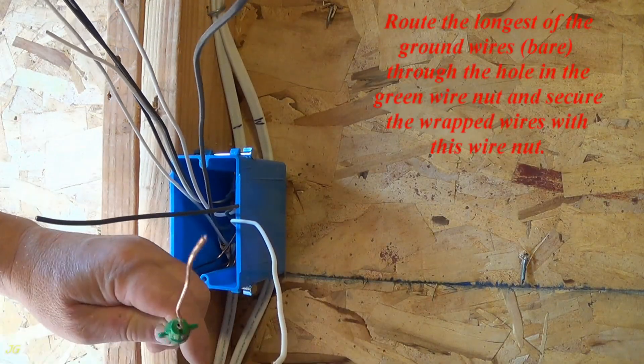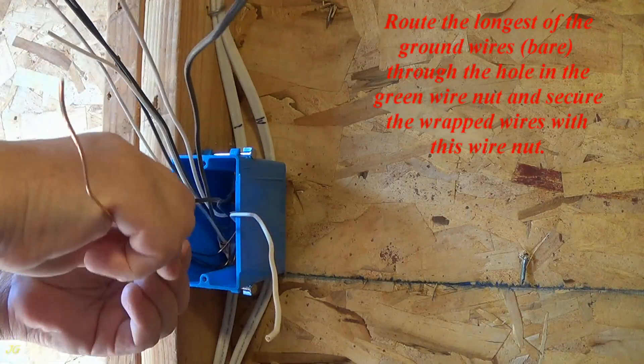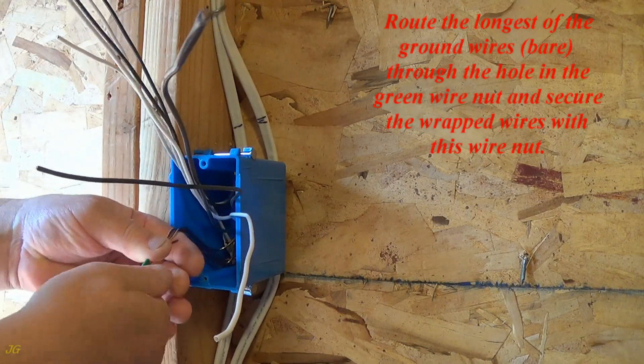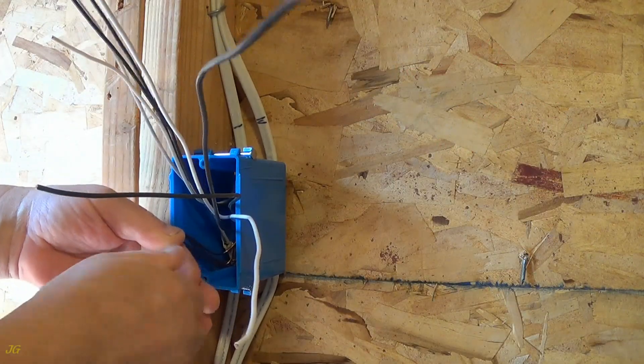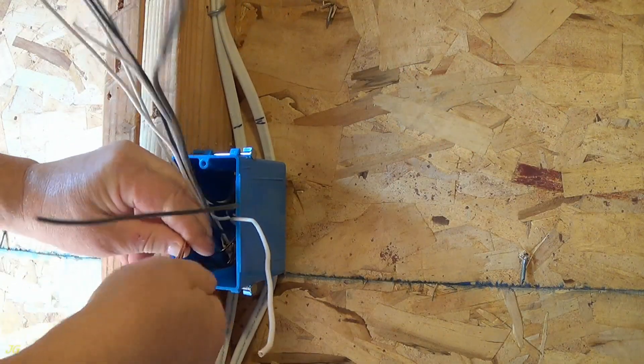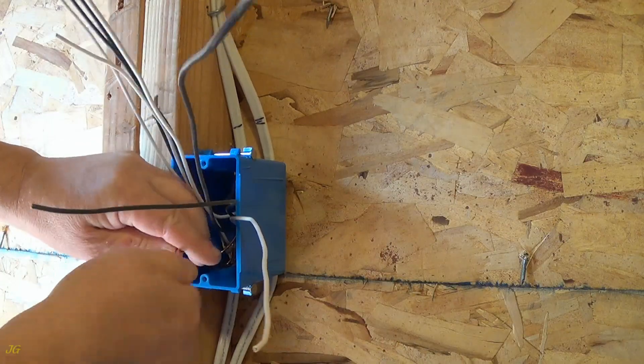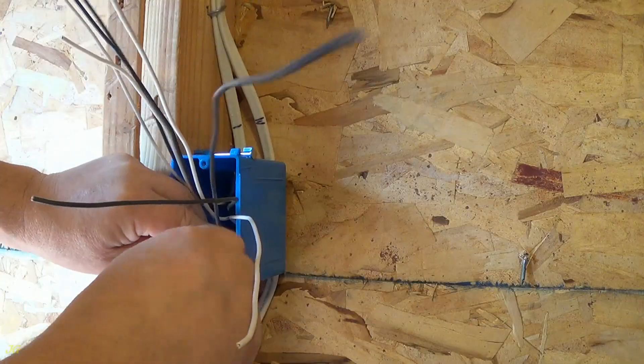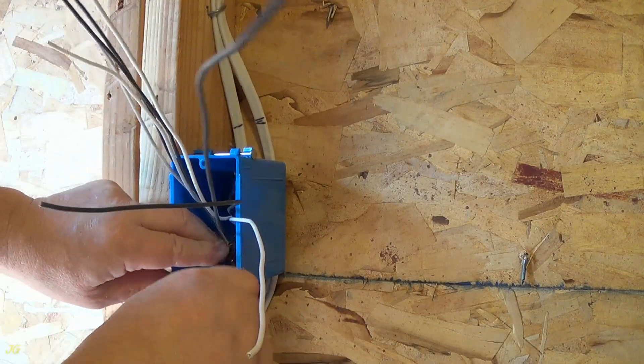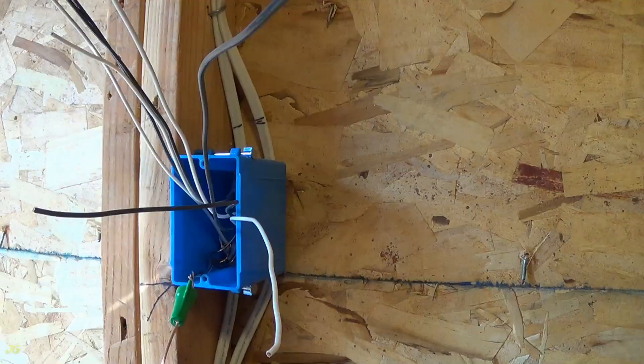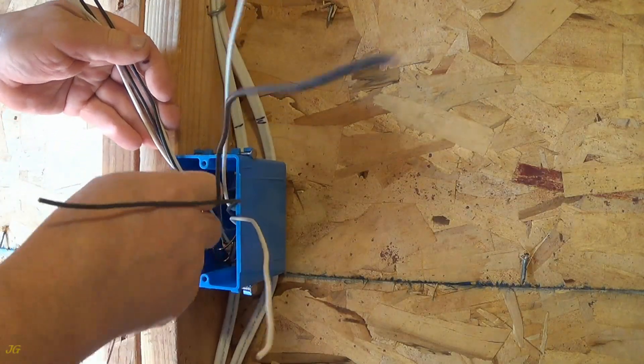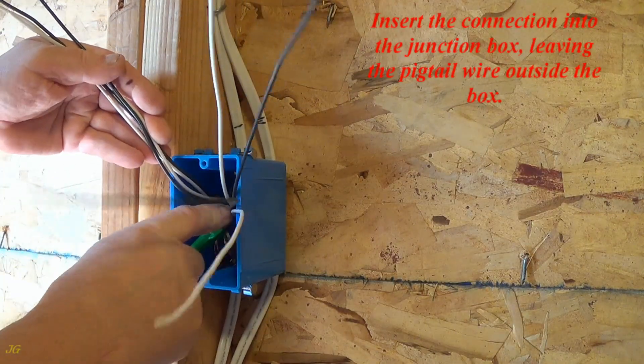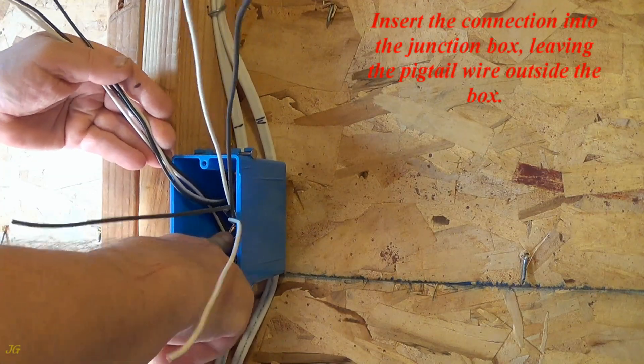Route the longest of the ground wires, bare, through the hole in the green wire nut and secure the wrapped wires with this wire nut. Insert the connection into the junction box, leaving the pigtail wire outside the box.